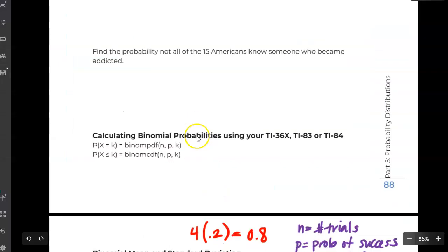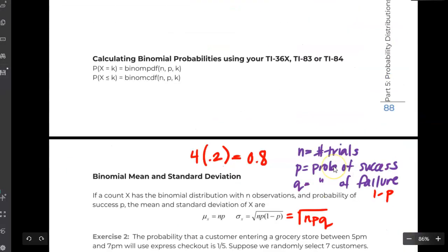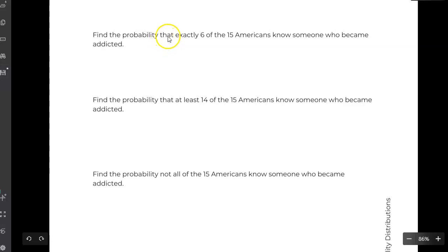The first question here says what's the probability that exactly six people know someone who's become addicted. The only outcome, if I'm going to translate this - and the only work you need to show on a question like this, you definitely need to say I'm using the binomial calculator - is that the probability X is equal to six.